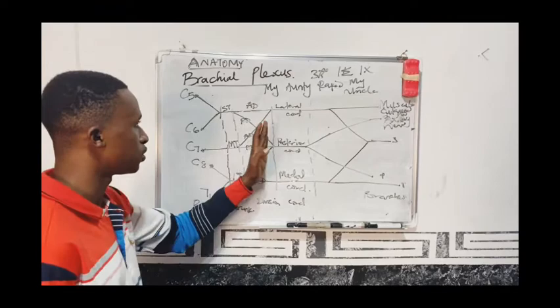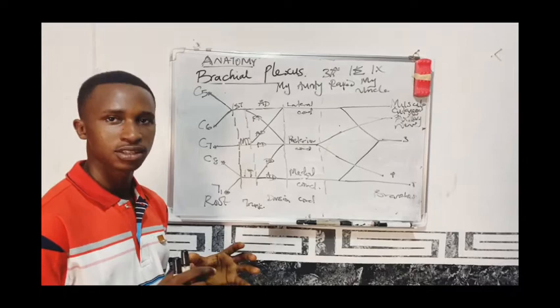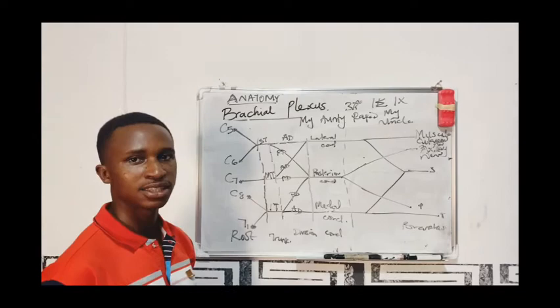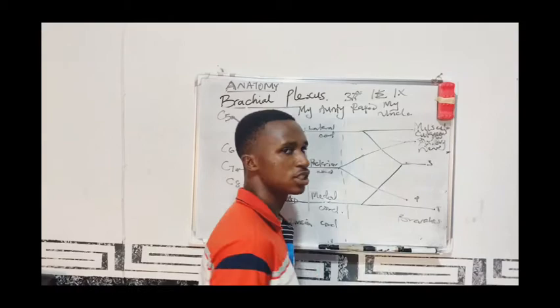There are five terminal branches, and you can remember these terminal branches using this mnemonic: 'My auntie raped my uncle.' M stands for the musculocutaneous nerve.